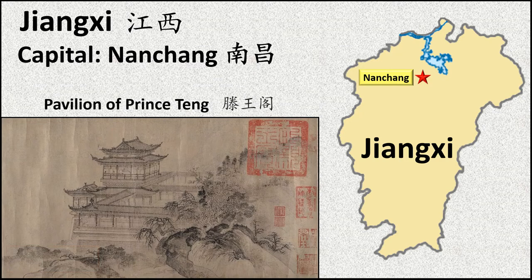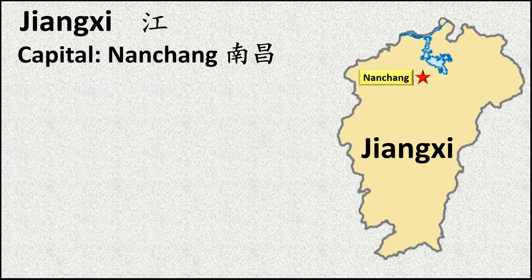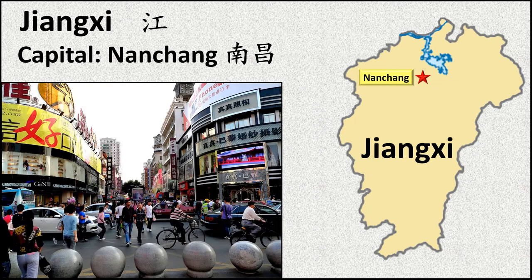An important ancient landmark in Nanchang is the Pavilion of Prince Teng. This structure was originally built in 653 during the Tang dynasty, and along with Wuhan's Yellow Crane Tower, it is considered to be one of the great towers of China. Today's Nanchang is a modern city known for a variety of industries, including machinery, textiles, electronics, and steel.